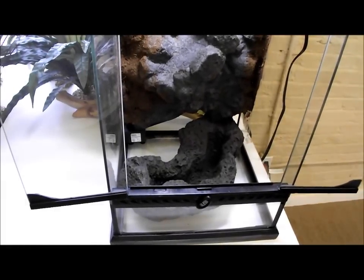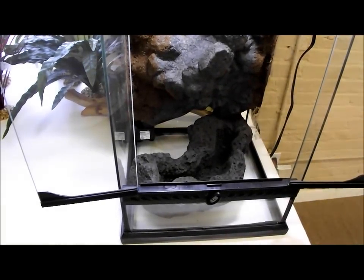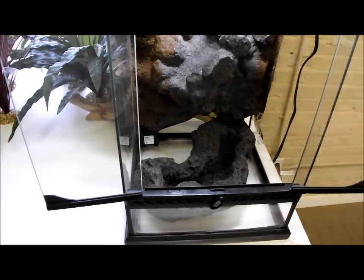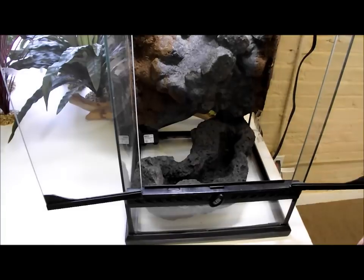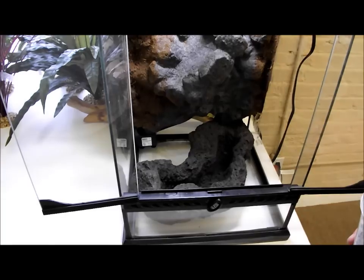For a substrate for the Anubias that will be used at the bottom of this vivarium, we're going to use some of Josh's Frog's false bottom. We typically use this as a drainage layer, but it works exceptionally well as providing biological filtration around the pump as well as providing a substrate that Anubias can thrive in.